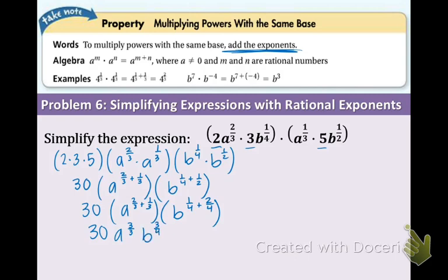Now there's one final step, that 3 over 3 right there is just 1, so that means we're going to have 30 a to the 1st, b to the 3 fourths, and lastly, yes, you don't need to write the 1, so it's 30 a b to the 3 fourths. And that is the simplified version of the original expression.